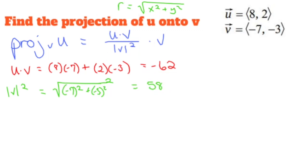All right, so now what I have is I have a fraction, and I'm going to multiply it to this vector right here. So I have negative 62 over 58 multiplied to the vector V, which is negative 7, negative 3.